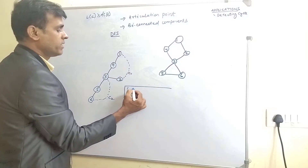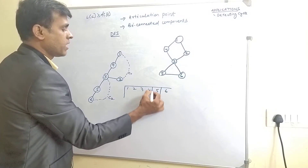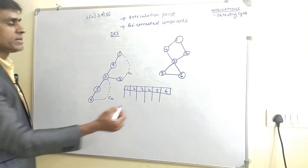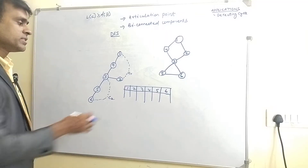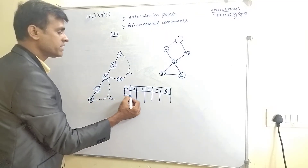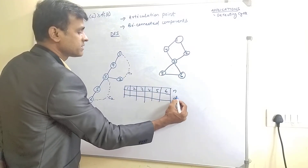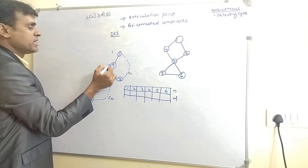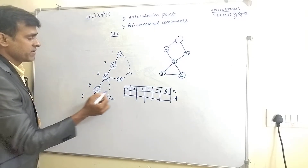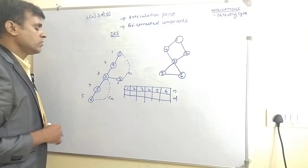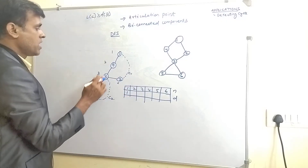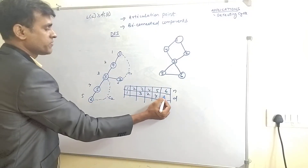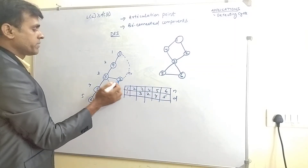The nodes are 1, 2, 3, 4, 5, and 6. We need to determine whether there is an articulation point in the graph by calculating the discovery time for each node. The discovery time is the order in which each node is first visited: node 1 has discovery time 1, node 4 is 2, node 3 is 3, node 5 is 4, node 6 is 5, and node 2 has discovery time 6.